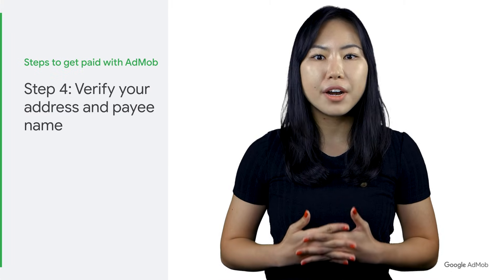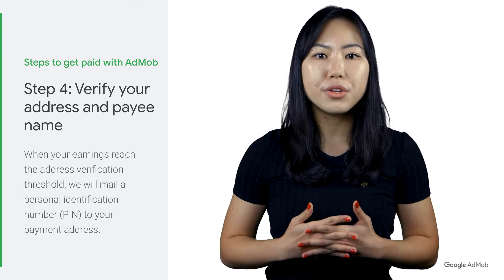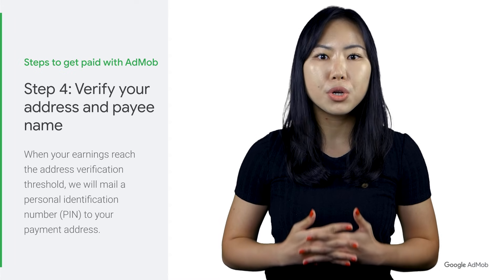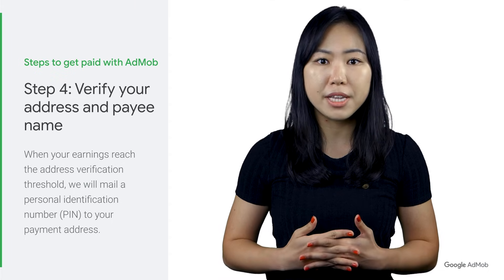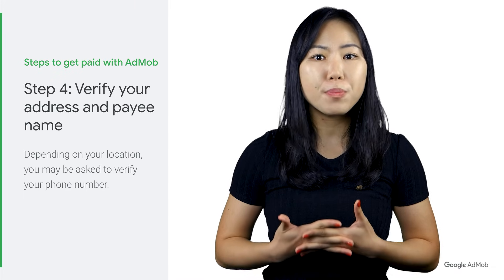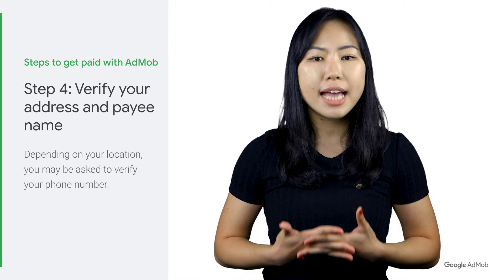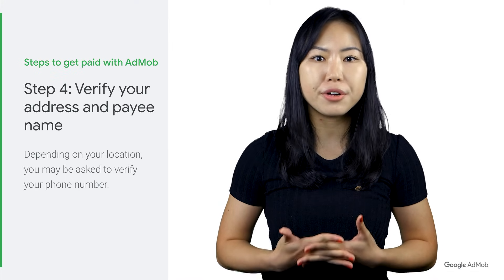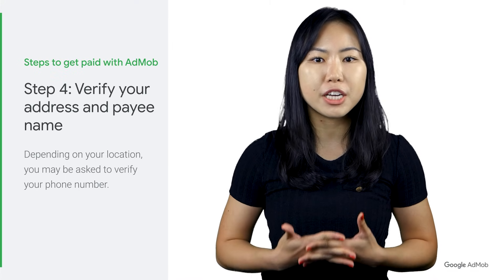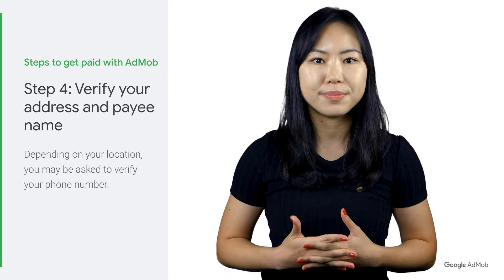Step 4: Verify Your Address and Payee Name. When your earnings reach the address verification threshold, we will mail a personal identification number or PIN to your payment address. You'll need to enter this PIN into your AdMob account before we can send any payments to you. Your PIN will be sent by standard post and will take 2-4 weeks to arrive. Depending on your location, you may also be asked to verify your phone number. Our system will call you at a pre-arranged time and you'll be required to dial in a verification number that appears in your AdMob account. Make sure the payment address, payee name, and phone number on your account is correct in case we need to contact you.